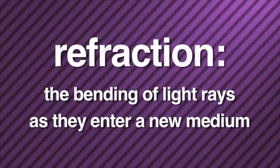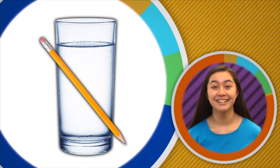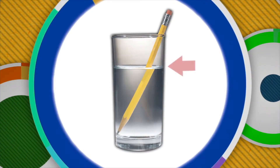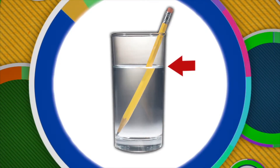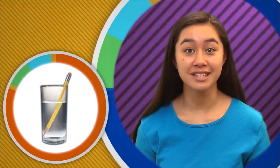A property of light we have not discussed yet is refraction — the bending of light rays as they enter a new medium. Here's a riddle you can try with your friends: can you get a pencil to bend using only water? Place the pencil in a glass of water. The pencil appears bent — but did it really bend? No, but it appears that way when it is partially submerged in the water.